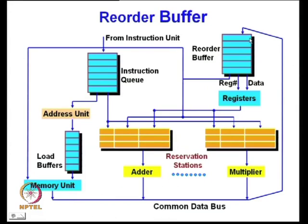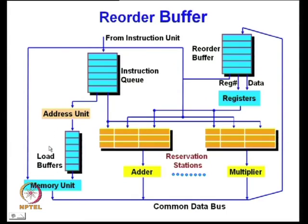The reorder buffer is connected to the common data bus — whenever functional units (memory unit, adder unit, multiplier unit) produce a result, it goes straight to the reorder buffer. From the reorder buffer, values go to registers, reservation stations, and the memory unit. In the case of a store instruction, since the store buffer is no longer present, data comes from the reorder buffer and is then stored to memory.